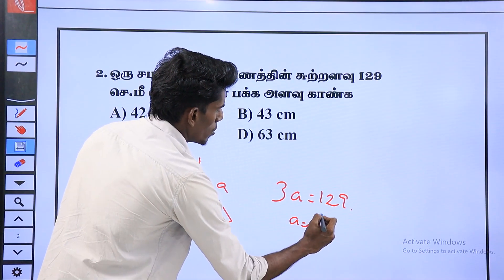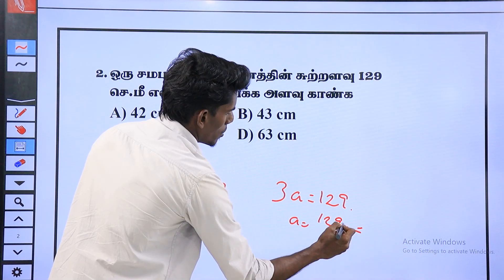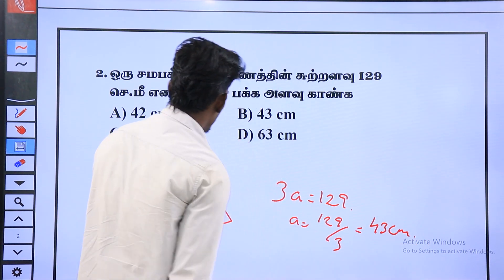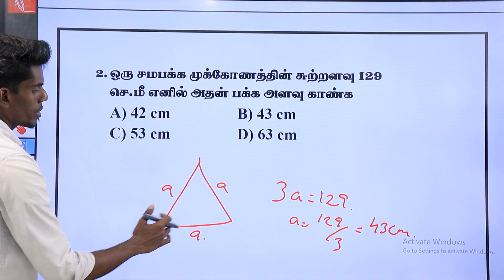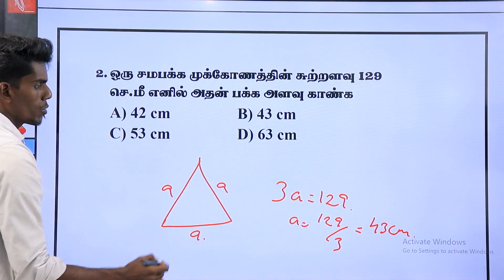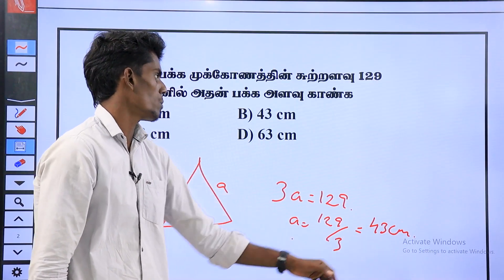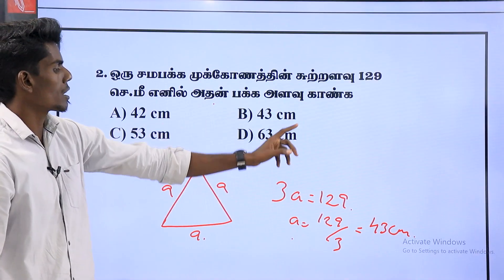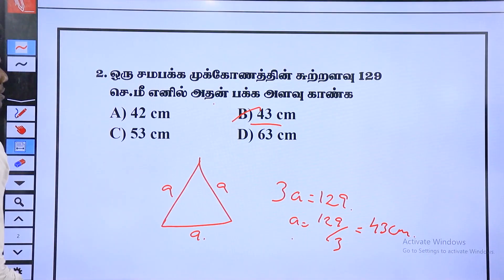A is equal to 1.29 by 3. A is equal to 43 cm. It's very easy. If you say 3 is equal to 3, then 1 is equal to A. 3 is equal to A. 3 is equal to 1.29. 1 A is equal to 43 cm. The option is equal to 43 cm. Option B is the answer.